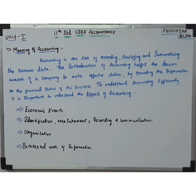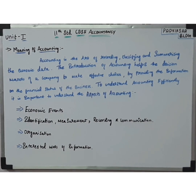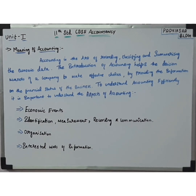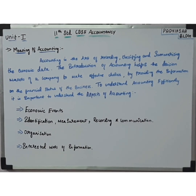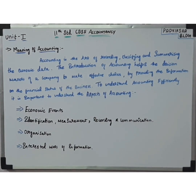The next aspect is interested users of information. It is about communicating important financial information to customers, according to which they will make the correct decision. For example, in the furniture company - sofa and dining table - the cost information of the sofa and dining table is important for the users interested in that information.